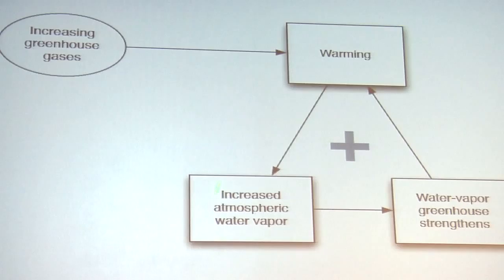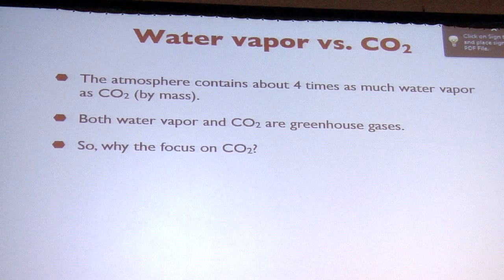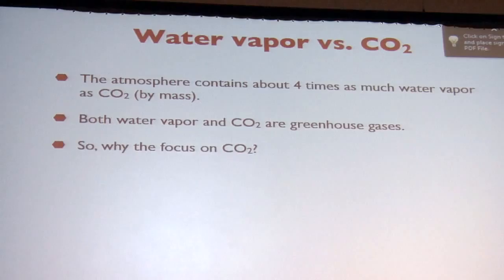So, this little diagram explains what the water vapor feedback is. Let's say that we increase greenhouse gases, and that does lead to a warming. Well, the warmer air contains more water vapor, and water vapor is a greenhouse gas. It blocks infrared. So, we get more warming, and it's a positive feedback. That's what the plus sign means. We also get an increase in the rates of precipitation and evaporation. The hydrological cycle speeds up. And this is a very strong, positive feedback.